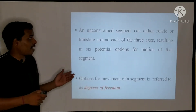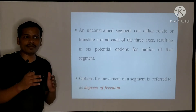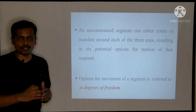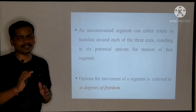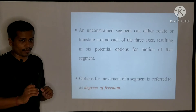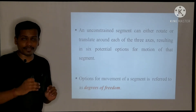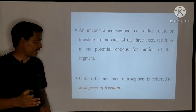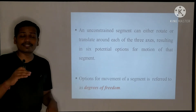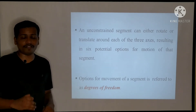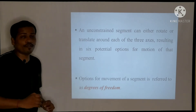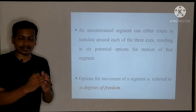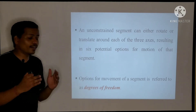An unconstrained motion of a segment occurs around an axis, resulting in rotatory motion, or along an axis, resulting in translatory motion. If an unconstrained segment rotates or translates around each of the three axes — X, Y, and Z — it results in six possible motions of that segment. The options available for a particular segment's motion are known as degrees of freedom.